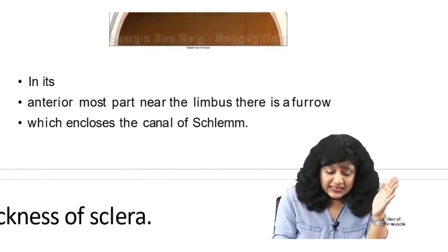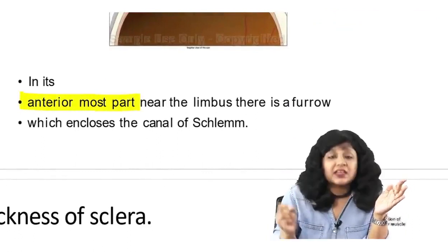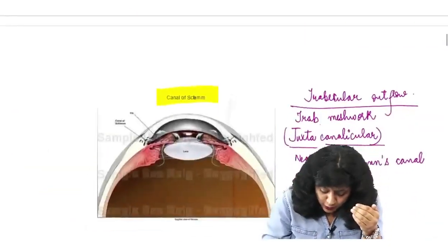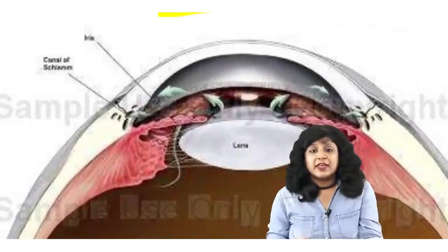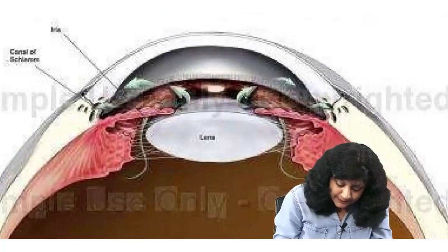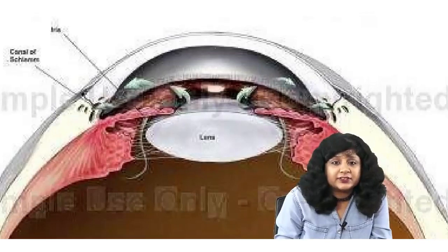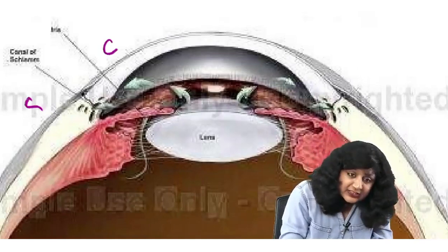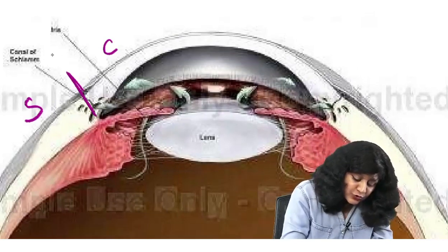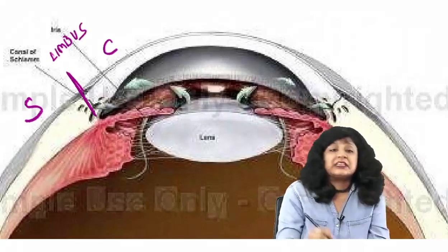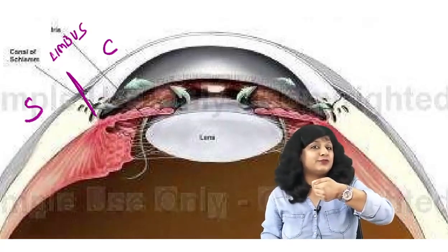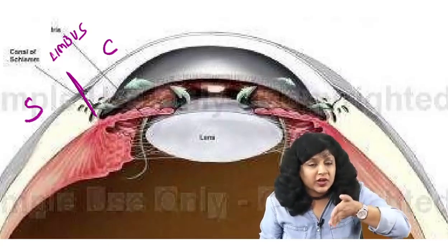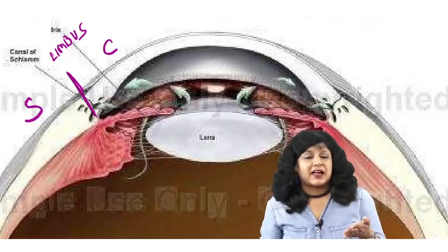The canal of Schlemm is lying in the anteriormost part near the limbus in a furrow. You can see here the layers of the cornea, and this is your cornea and this is your sclera, so this portion is the limbus. There is a furrow near the limbus and in that furrow lies this canal of Schlemm, lined by endothelial cells. It is oval in shape and it allows the drainage of aqueous humor.